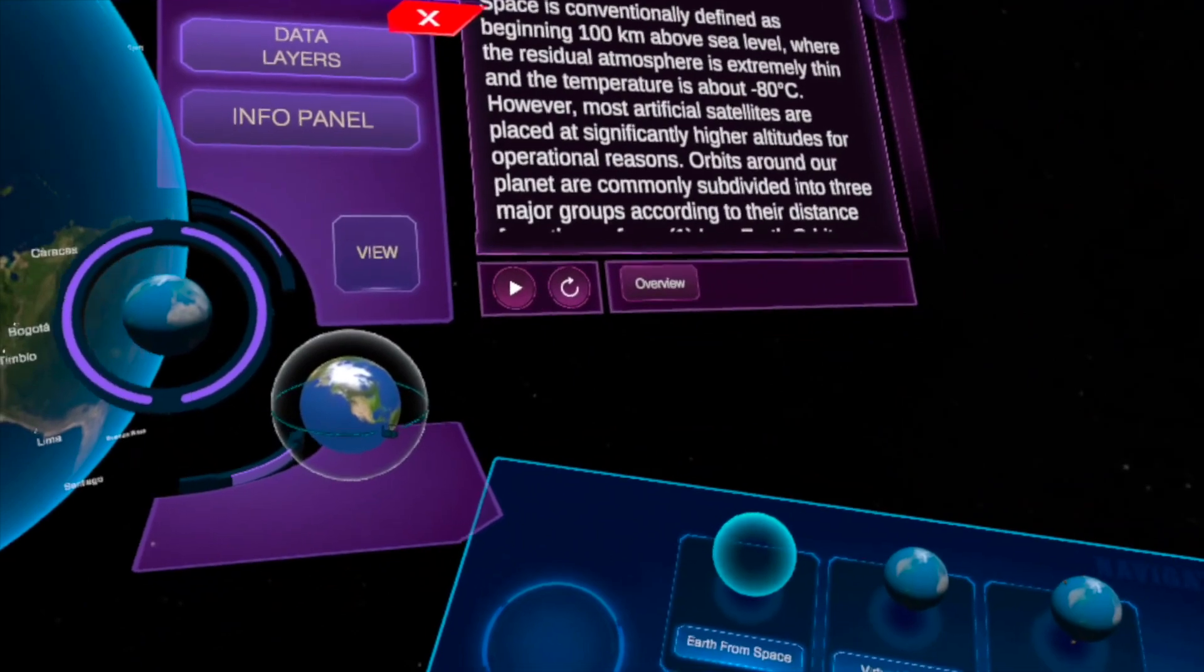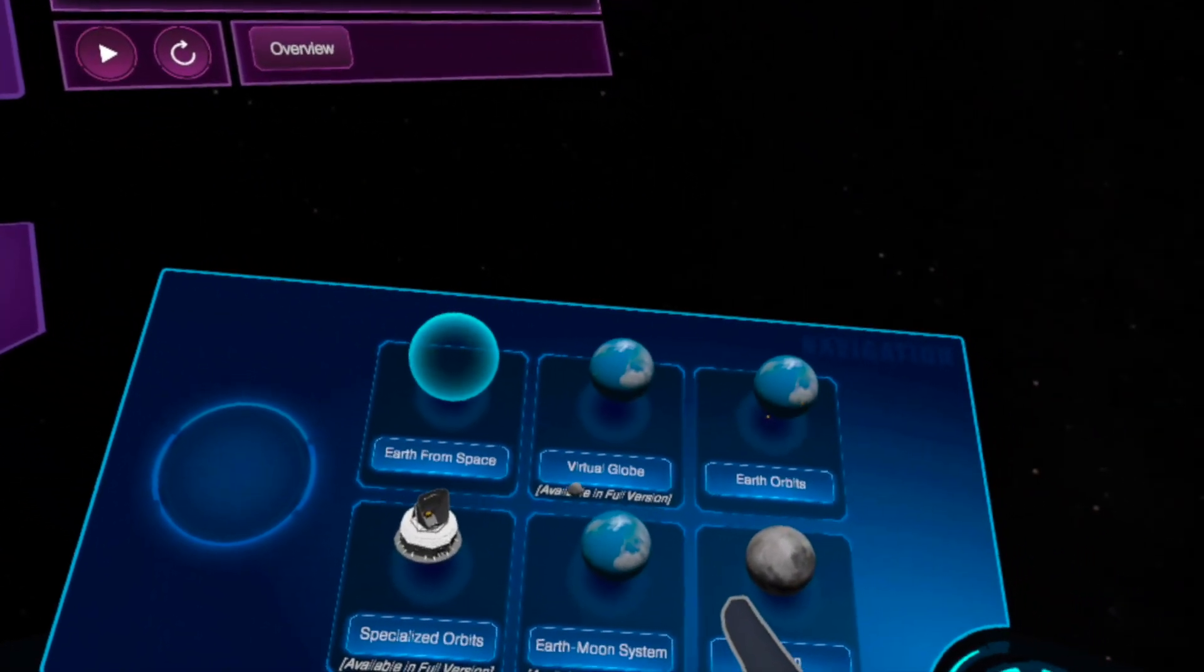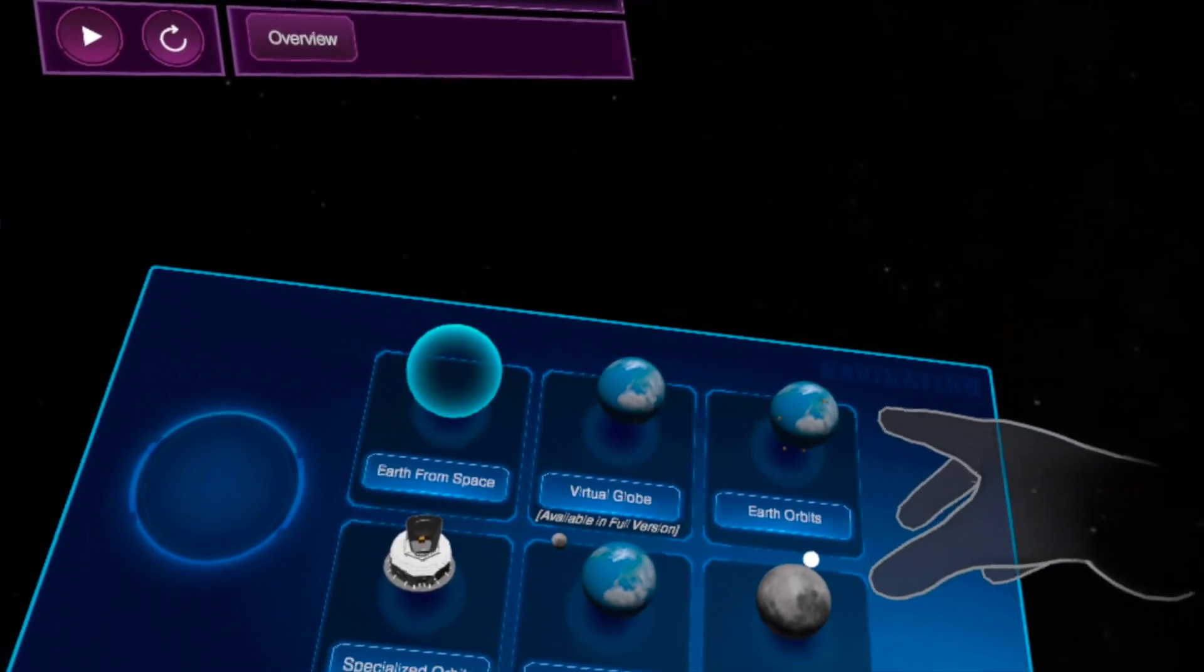Space is conventionally defined as beginning 100 kilometers above sea level, where the residual atmosphere is extremely thin and the temperature is about minus 80 Celsius. Do everything with your controllers or with your hands like that. So let's go back to the data layers, geographic map like that.